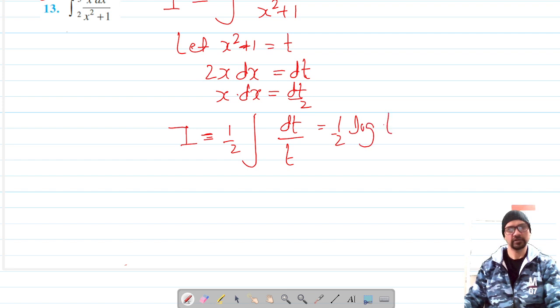half log t, which gives us half into log of x squared plus 1. This is our antiderivative, and let's use the second fundamental